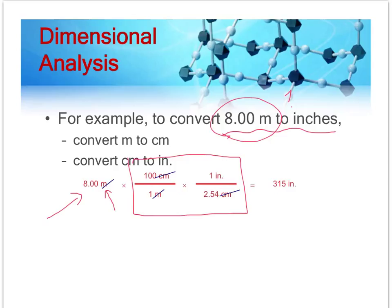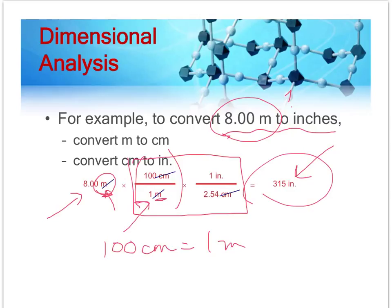Well, you'll either be given the conversion factor or if it's a real simple one, we would expect you to know it. For example, 100 centimeters equals 1 meter. And that's a conversion that you would be expected to know. And so what you do, in this case you've got, it's a two-step problem. But the units of your given information, which is meters, have to show up in the denominator of your conversion factor. And that's because you want to cancel out the units of your given information.